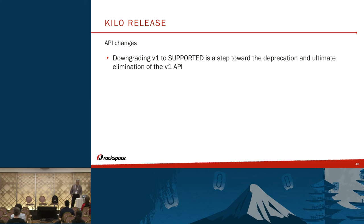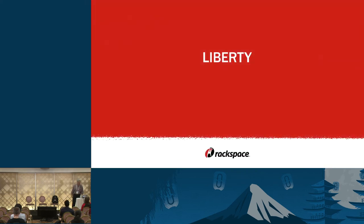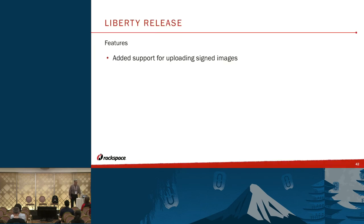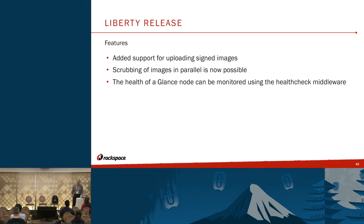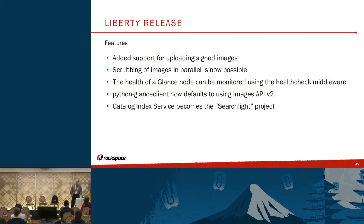Downgrading V1 from current to supported is a step toward deprecation and ultimate elimination of the V1 API. Liberty, which just came out about a month ago, brings support for uploading signed images, scrubbing images in parallel, health check middleware to monitor the health of a Glance node, a change in the Python Glance client so that it defaults to using the V2 API, and the catalog index service pulled out of Glance as its own project, Searchlight.